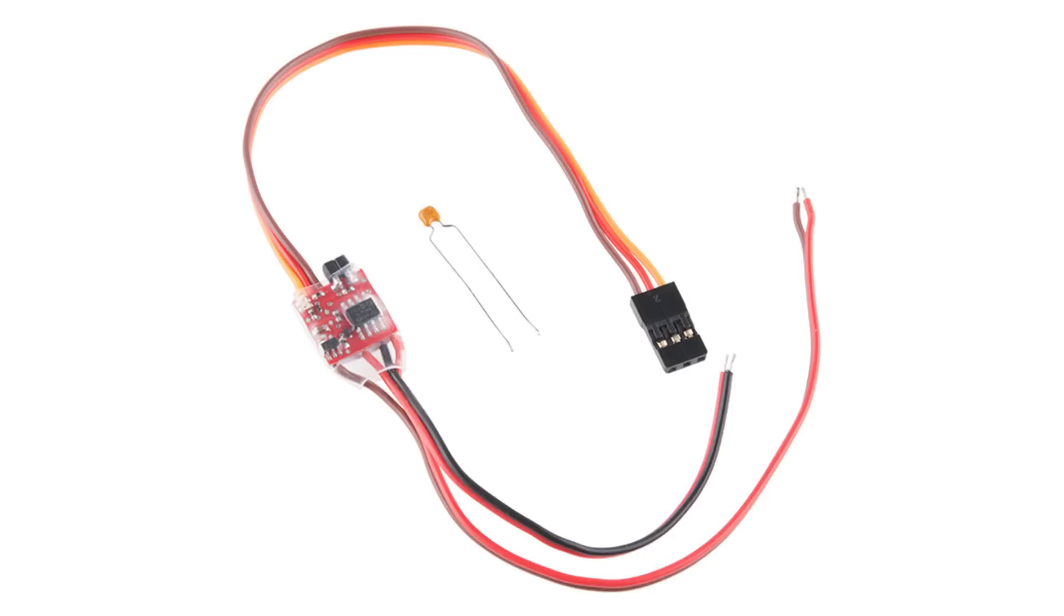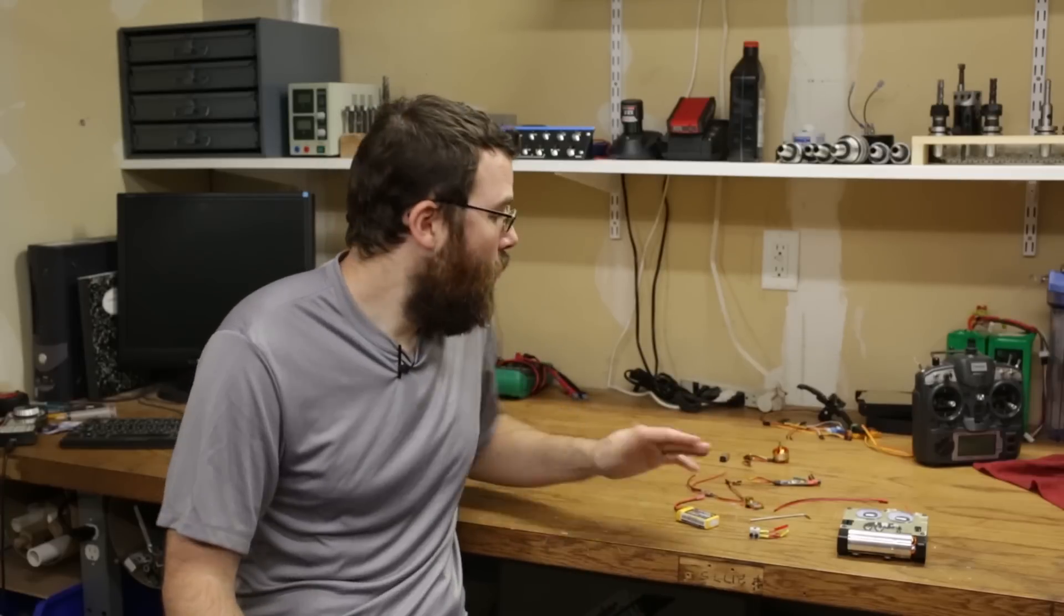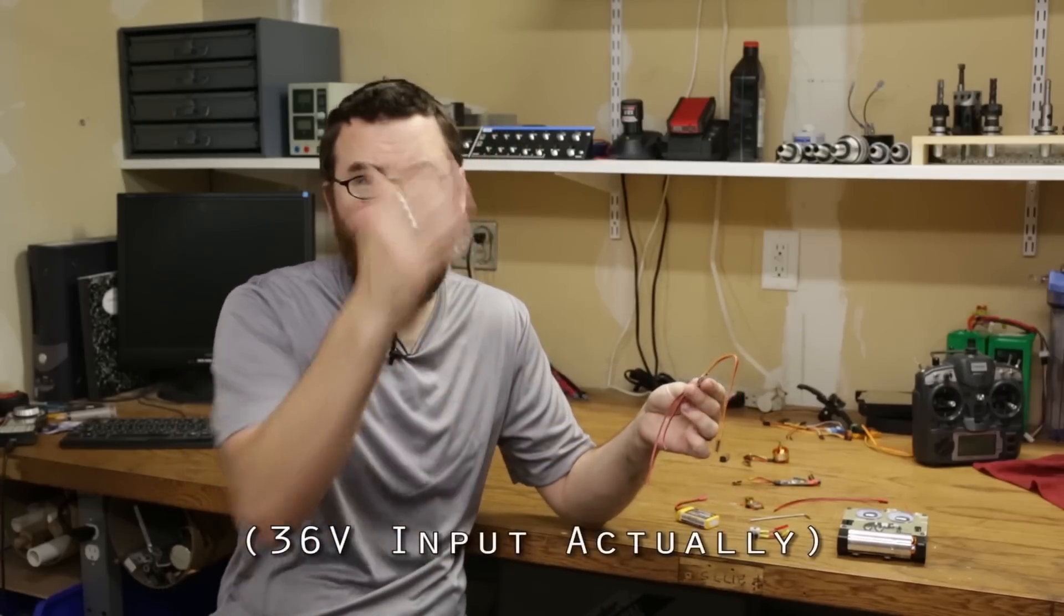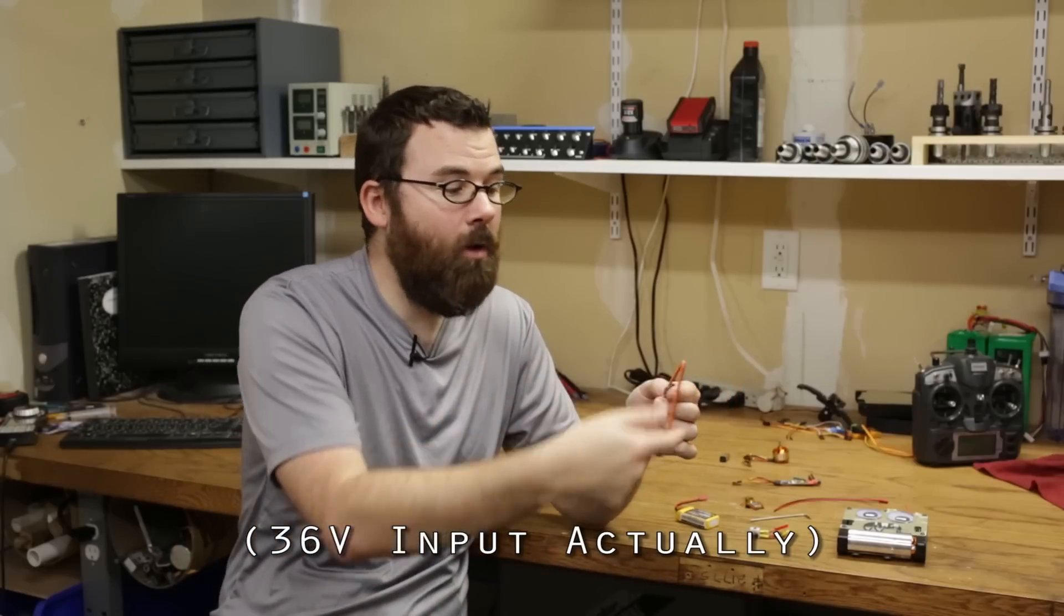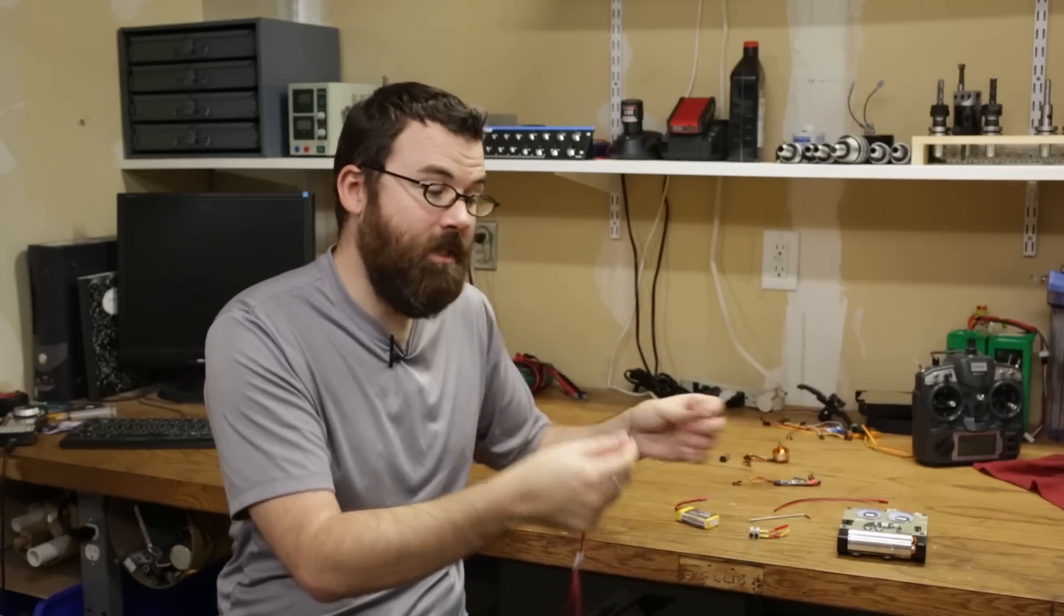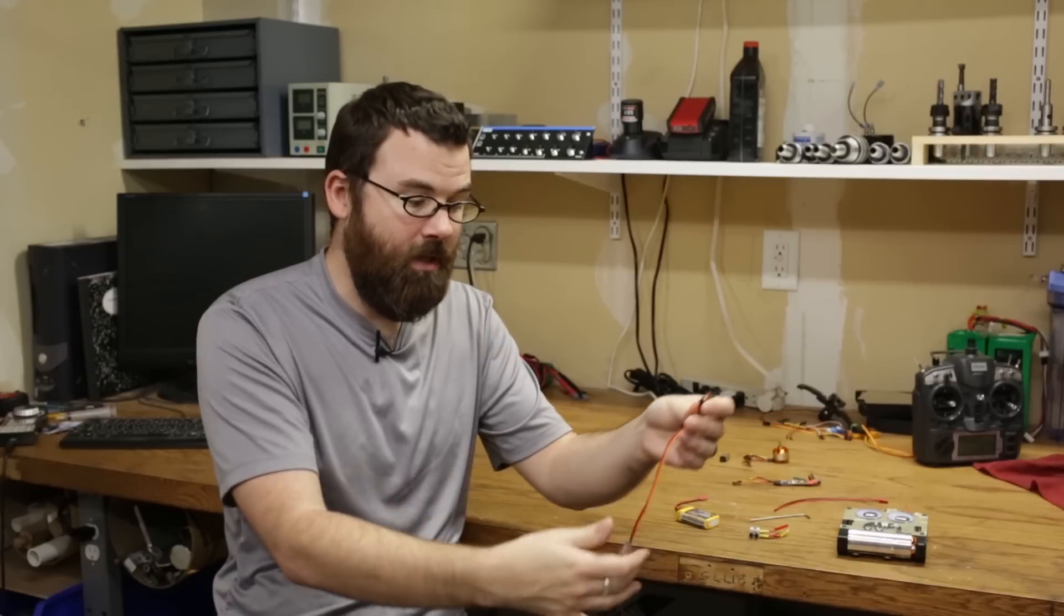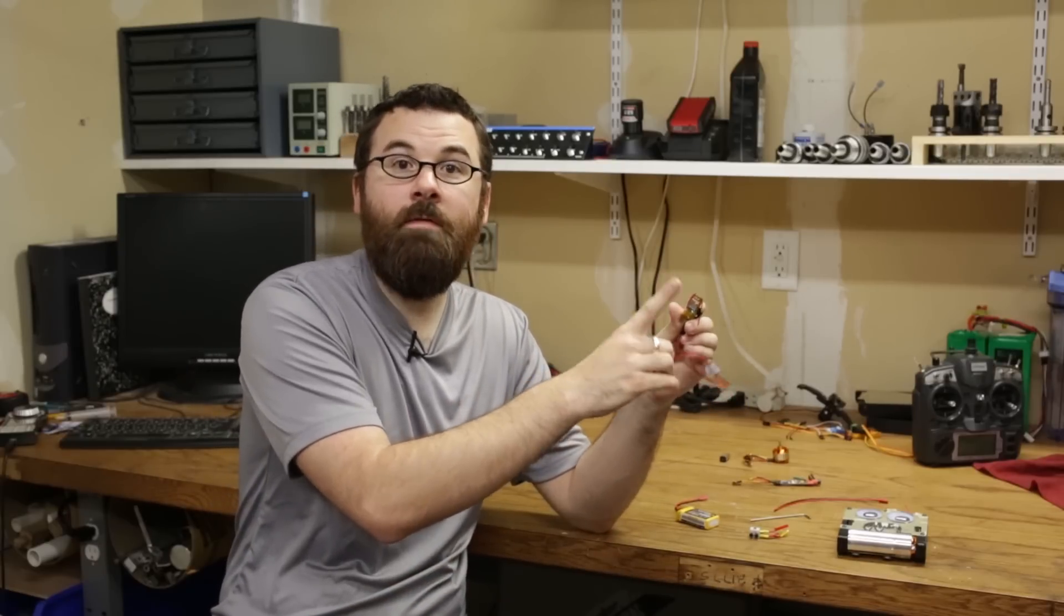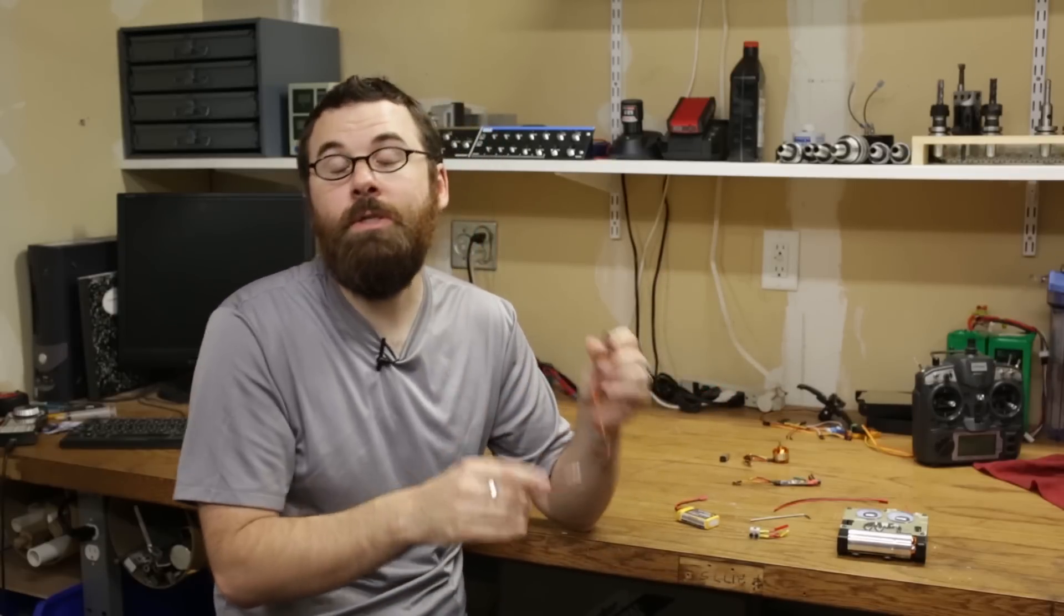A battery eliminator circuit essentially means that when you feed this with its input voltage, I think this can handle up to 20 volts, it will actually output along this pin a 5 volt signal for your receiver. So when you plug this into the receiver and power this with your battery, it automatically sends a good 5 volts into this, so you don't need to worry about that.